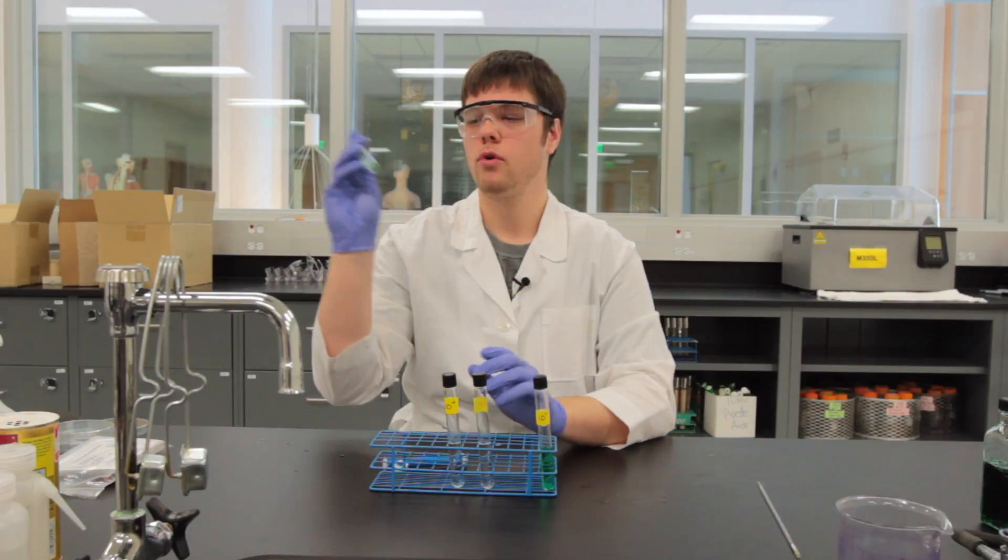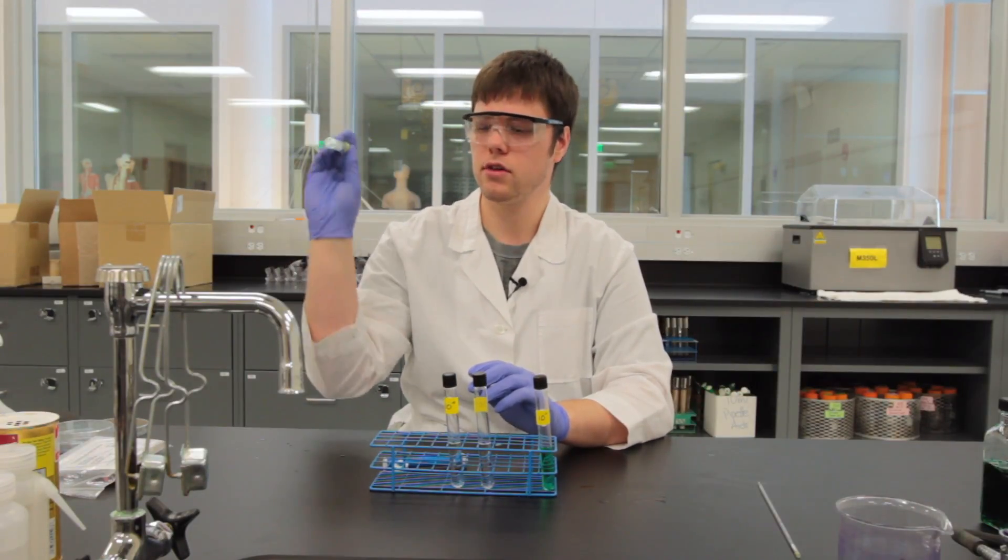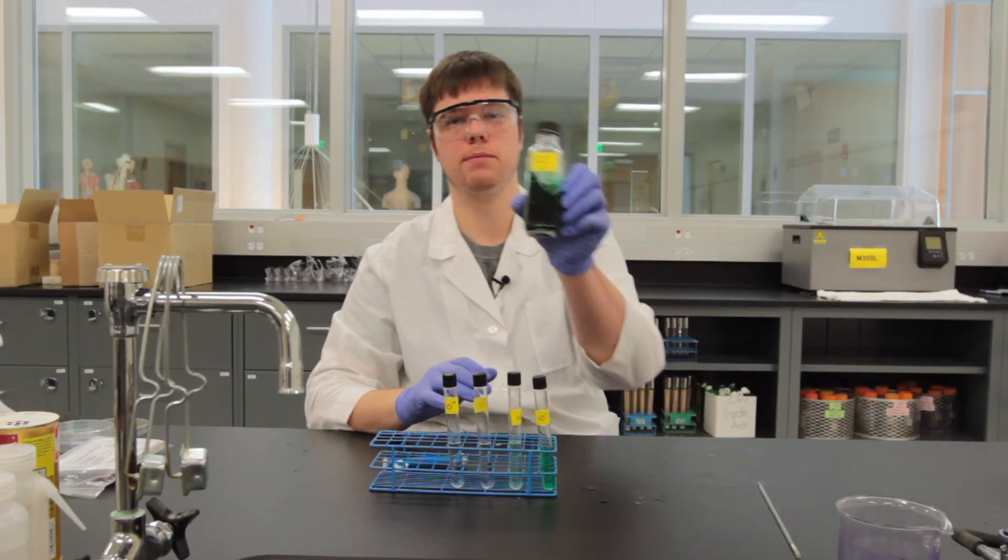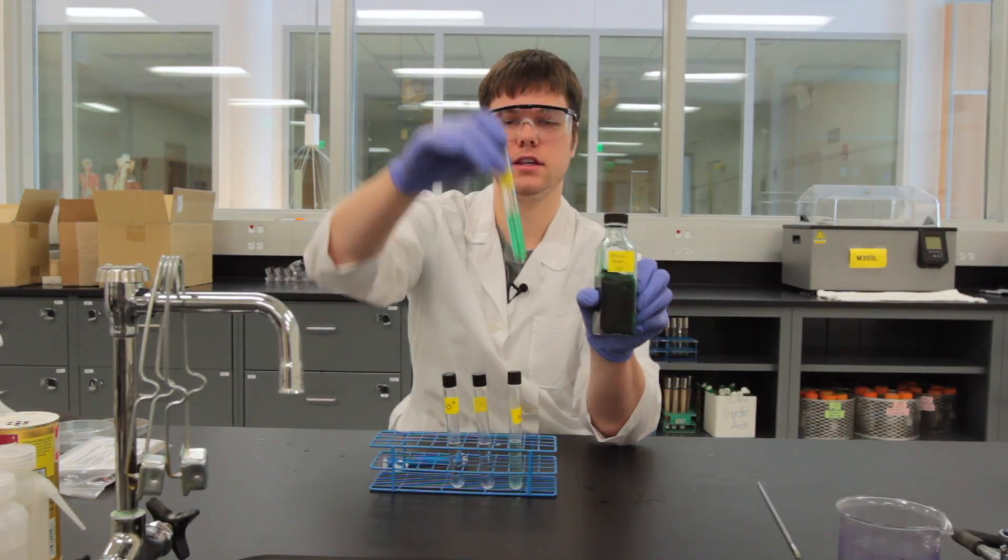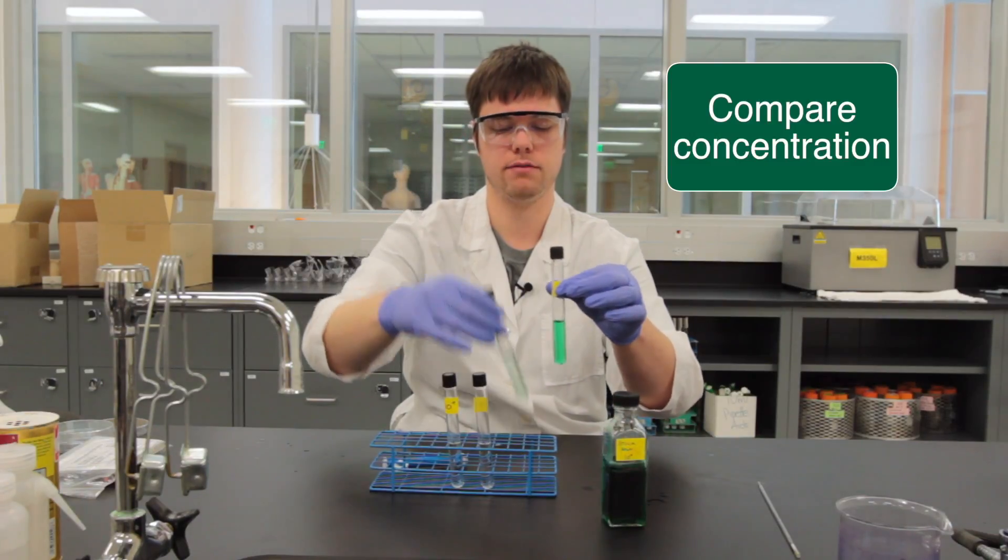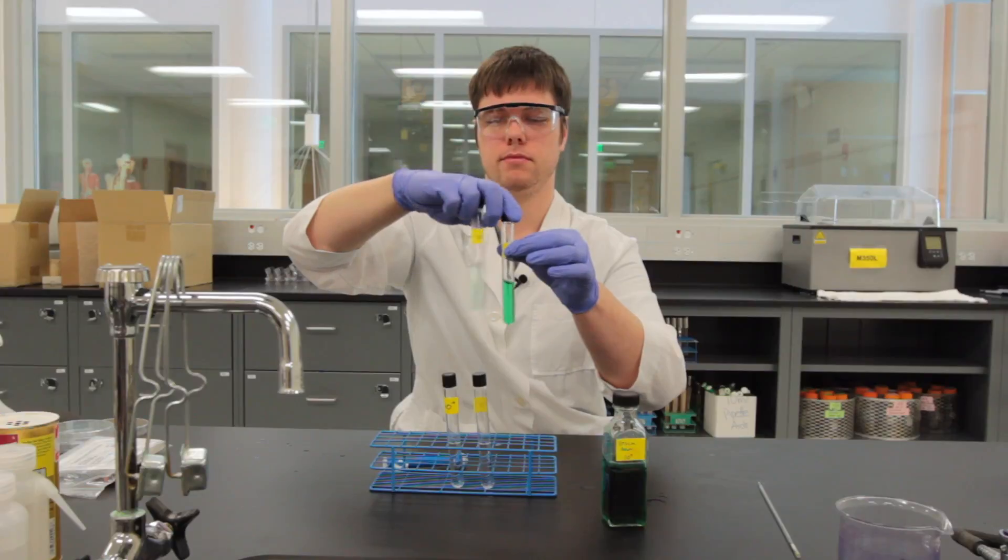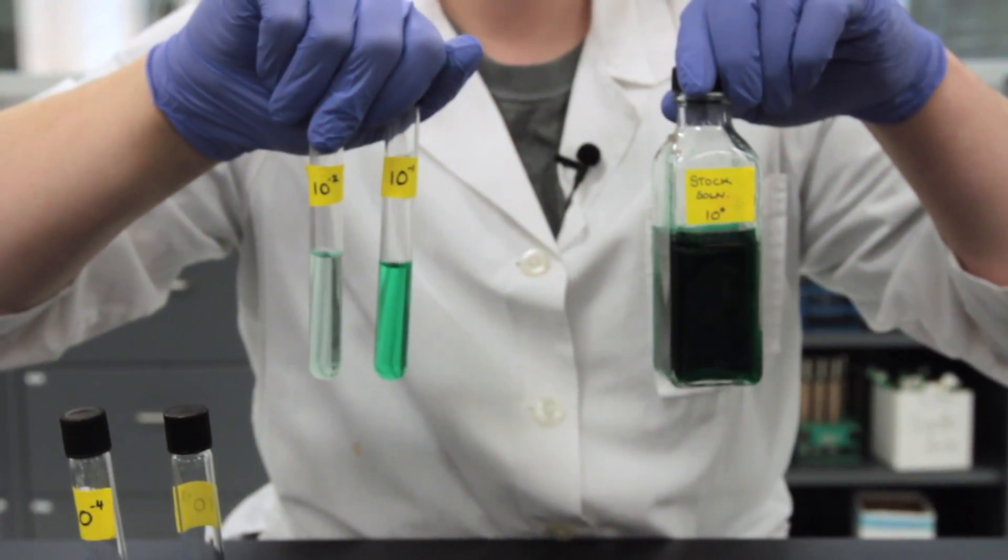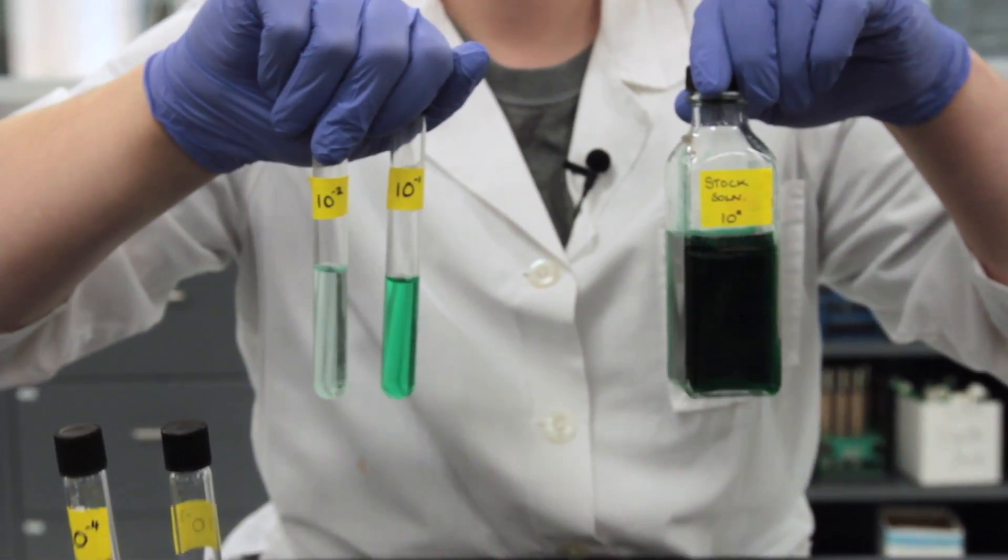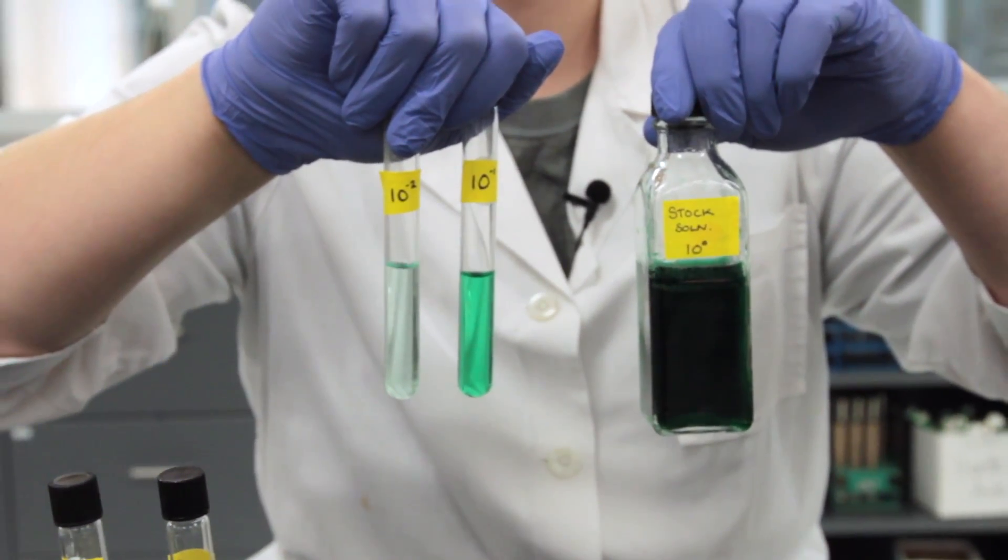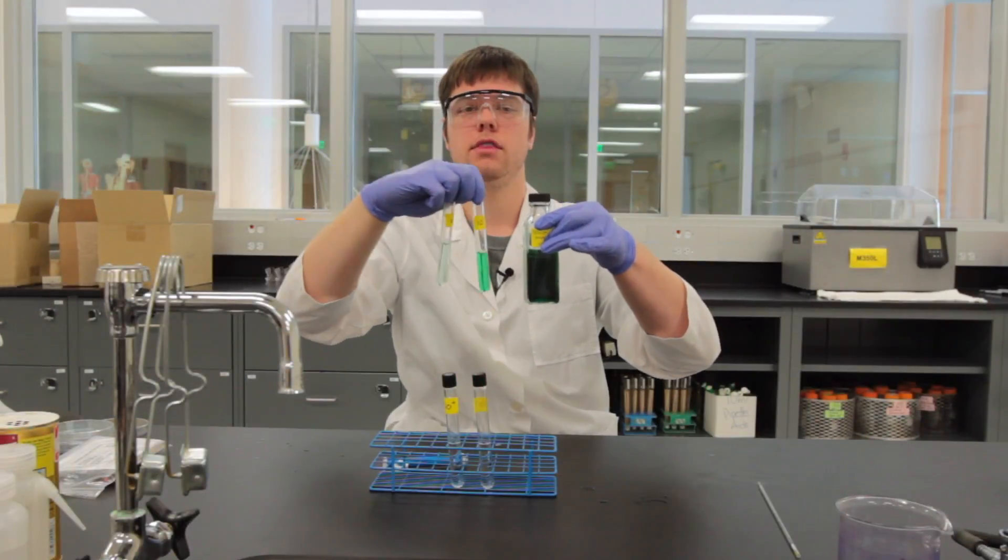Give that 10 to the negative 2 a few shakes, and if we compare from our stock bottle to our 10 to the negative 1 bottle or test tube to our 10 to the negative 2 test tube, notice how as we go down in dilutions, our solution gets less and less colorful. It means that we are diluting out that color.